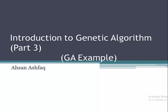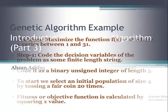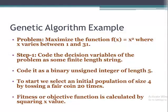The problem we have today is to maximize the function f(x) = x², where x varies between 1 and 31. We have to maximize it — that will be our objective function. The solution space is the set of all possible solutions between 1 and 31. We are going to solve this problem with the help of genetic algorithm.